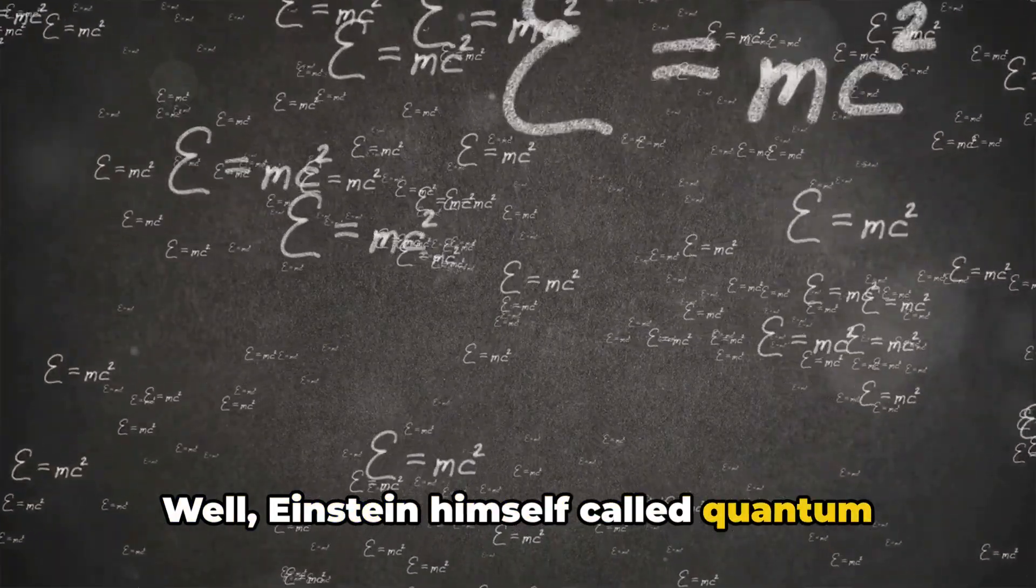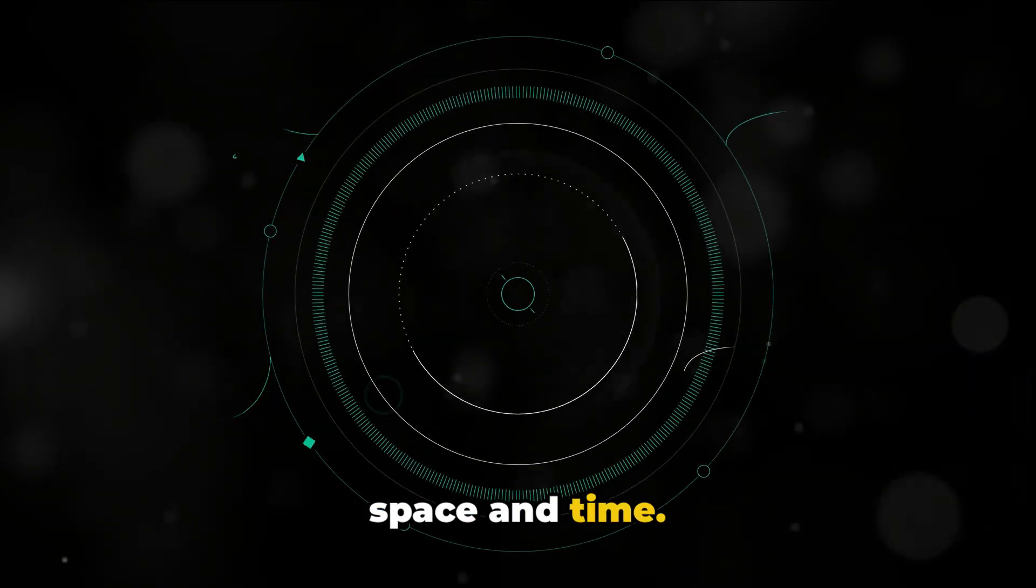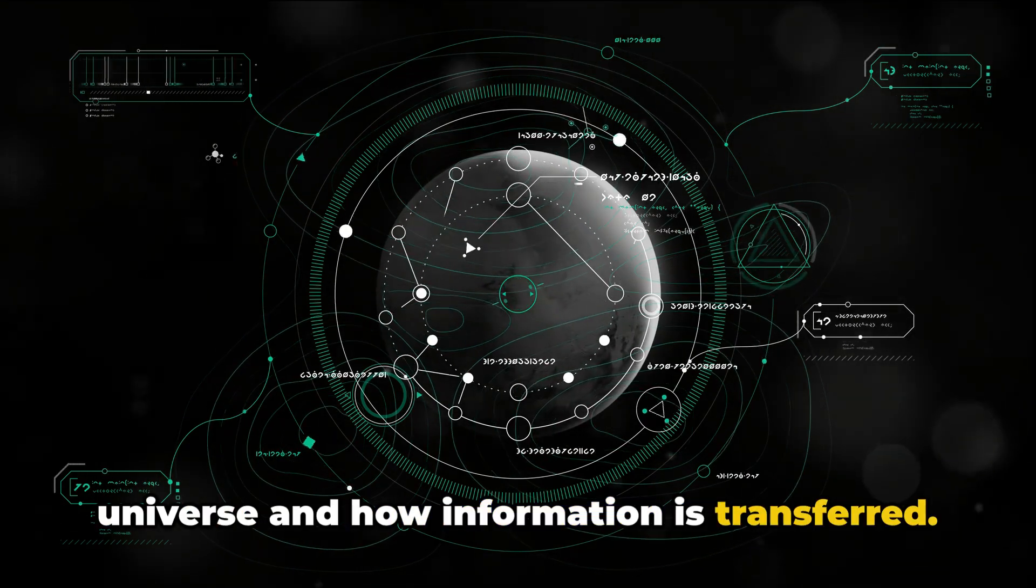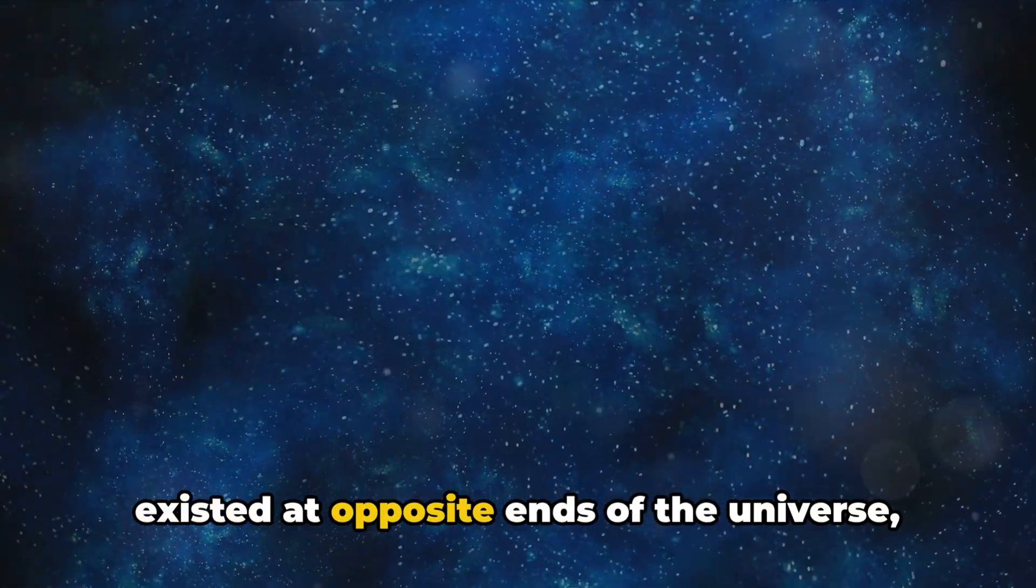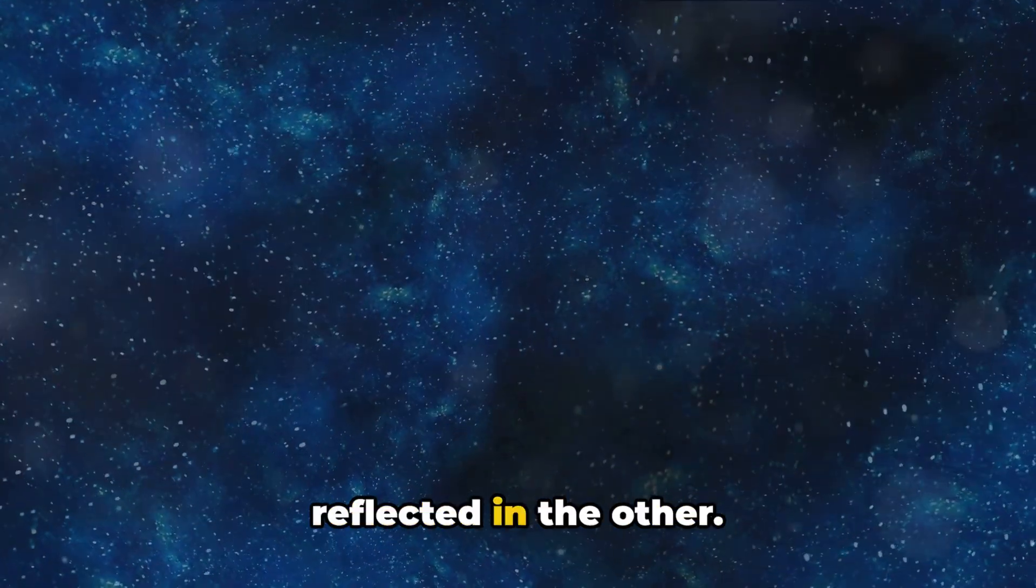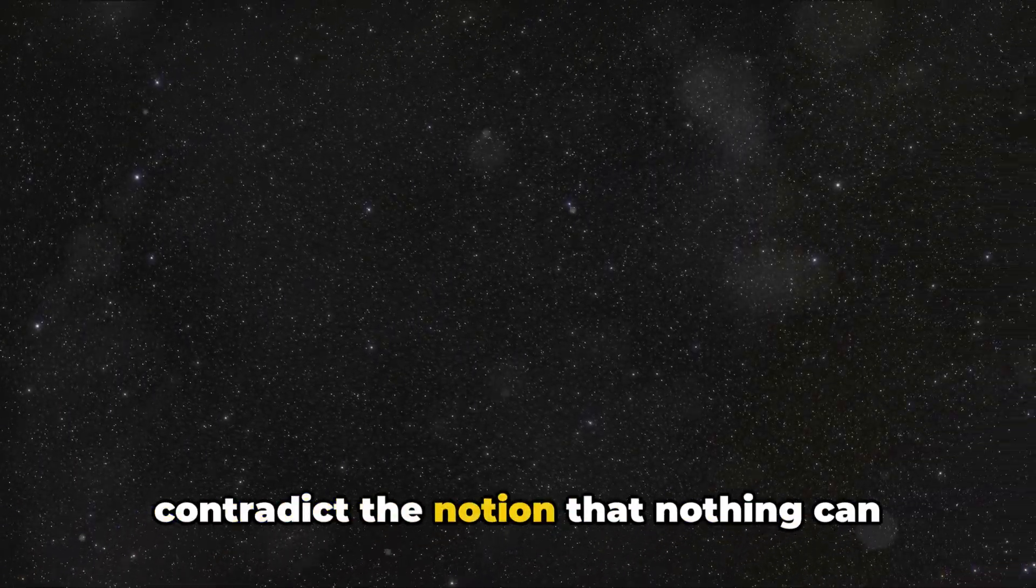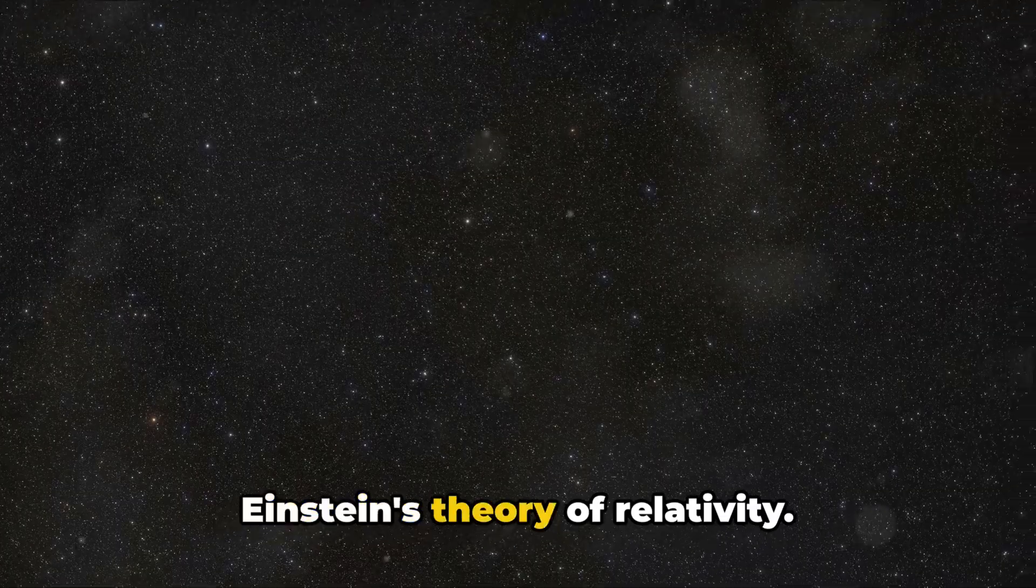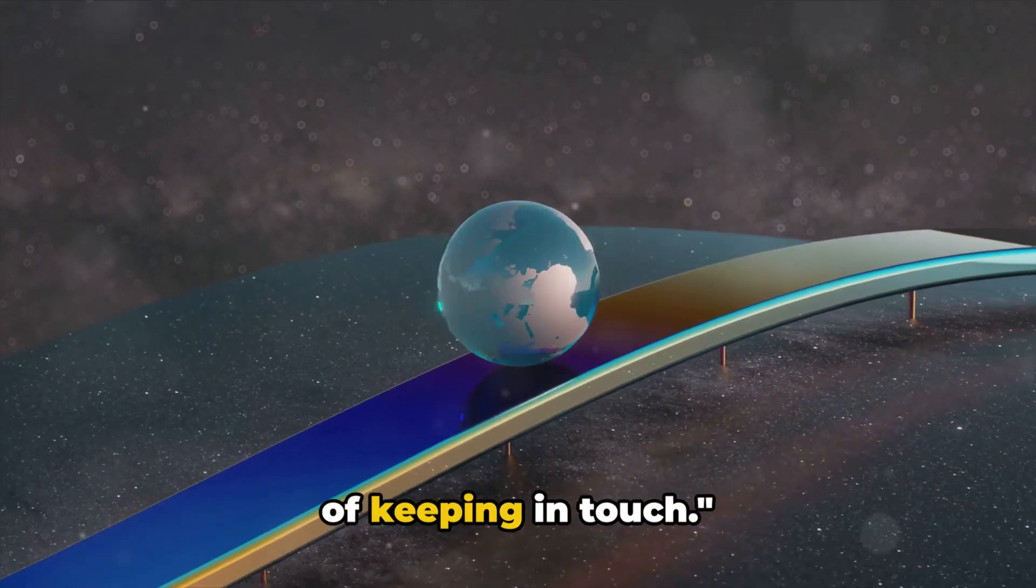Well, Einstein himself called quantum entanglement spooky action at a distance because it seemed to defy the limits of space and time. It challenges our understanding of the universe and how information is transferred. Imagine if two entangled particles existed at opposite ends of the universe, a change in one would instantly be reflected in the other. This instantaneous action appears to contradict the notion that nothing can travel faster than light, a pillar of Einstein's theory of relativity. Quantum entanglement, the universe's way of keeping in touch.